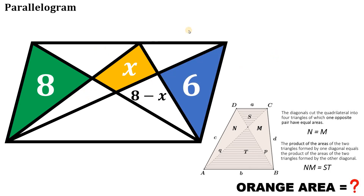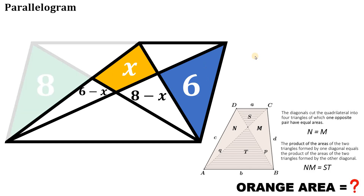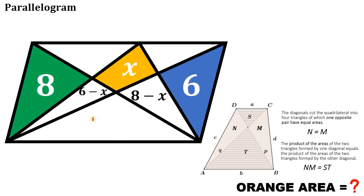Now for the other trapezoid: if this region is 6, the other corresponding region is also equal to 6. So this part must be 6 minus x. To solve for the value of x, we want all regions expressed in terms of x, which makes it straightforward to solve.